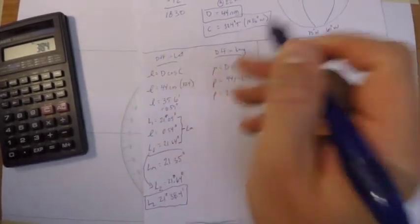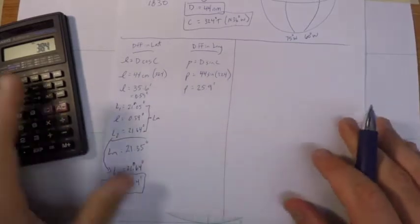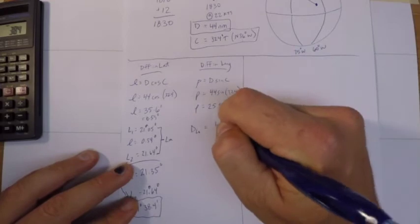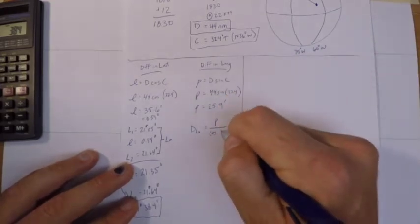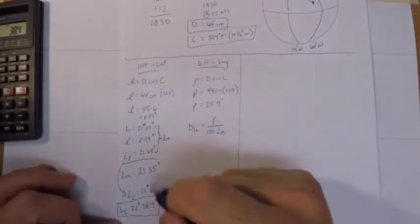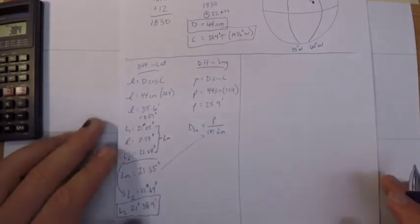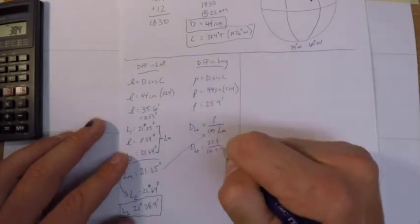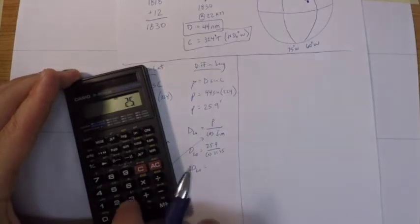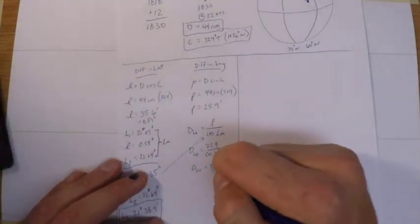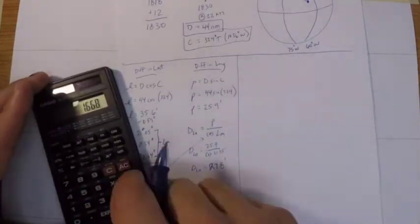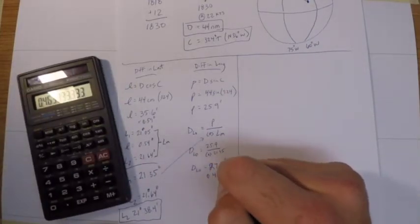And I'm going to need that when it comes to solving my next part of the problem. So back to the difference in longitude: once I have my L and my P, then I can go into getting my D-low or difference in longitude. It's just P over the cosine of the mid-latitude. And so I'll just go ahead and solve that. It's going to equal 27.8 minutes or 0.46 degrees.